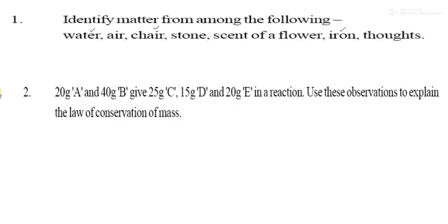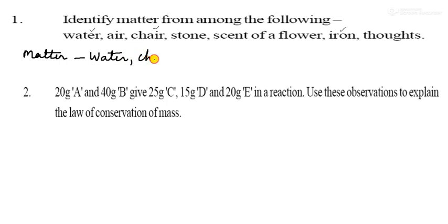Now, identify matter from among the following. What is the matter? First one is water — water is a matter. And chair — chair is formed with the help of wood. And iron. These are all matters.